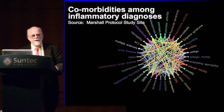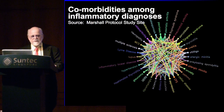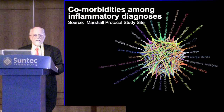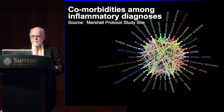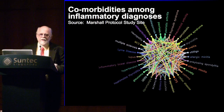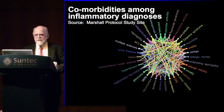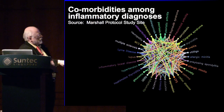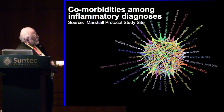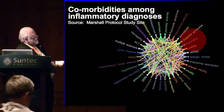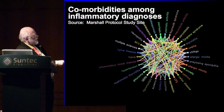30 years ago when I first started getting interested in autoimmune diseases, one of the things that really fascinated me was how similar all the autoimmune diagnoses are. On this chart we've plotted comorbidities amongst the inflammatory diagnoses in a seven-year study cohort. Thyroiditis, for example, is a very common comorbidity with other diseases.